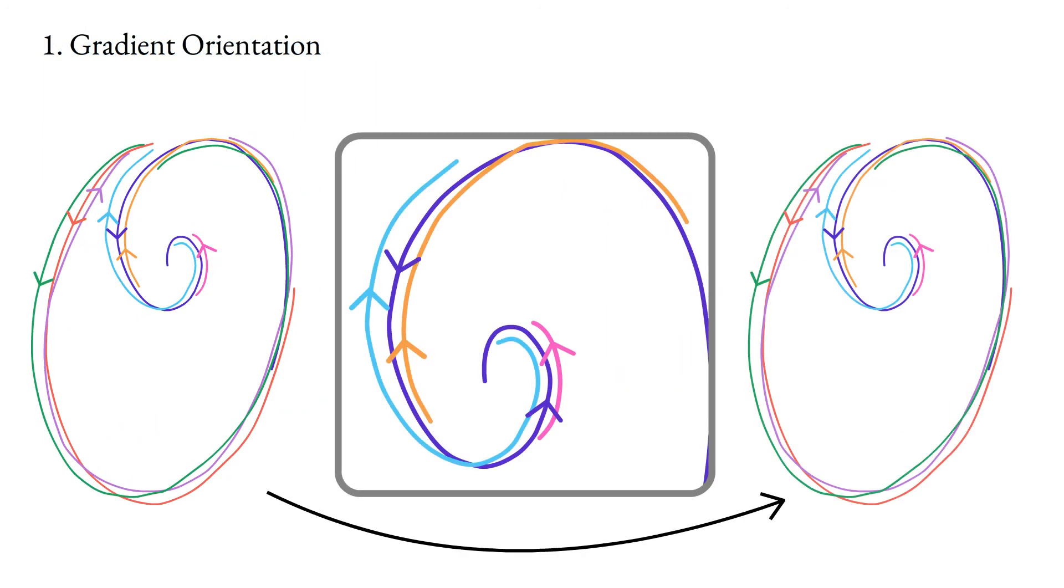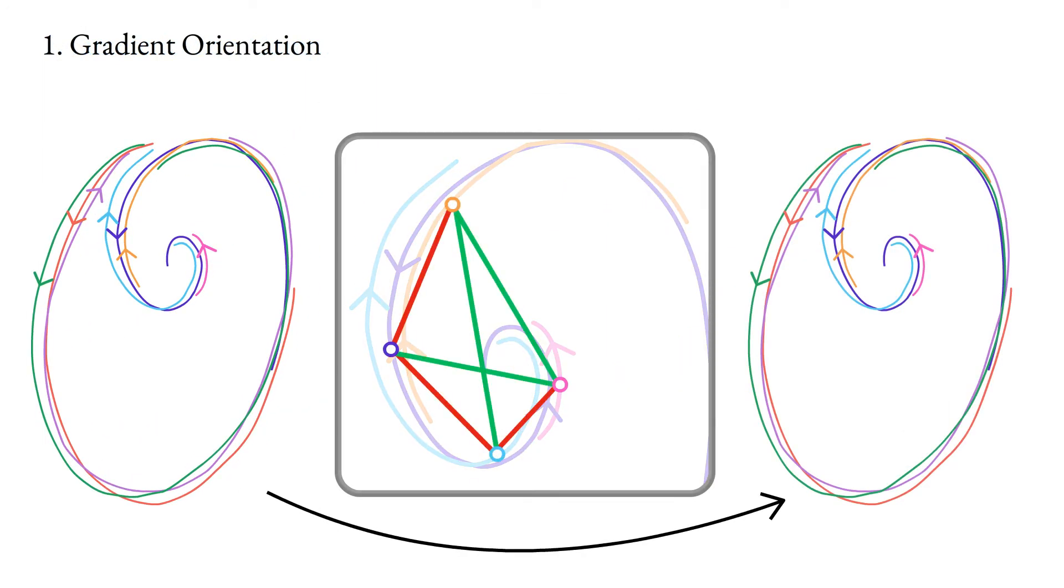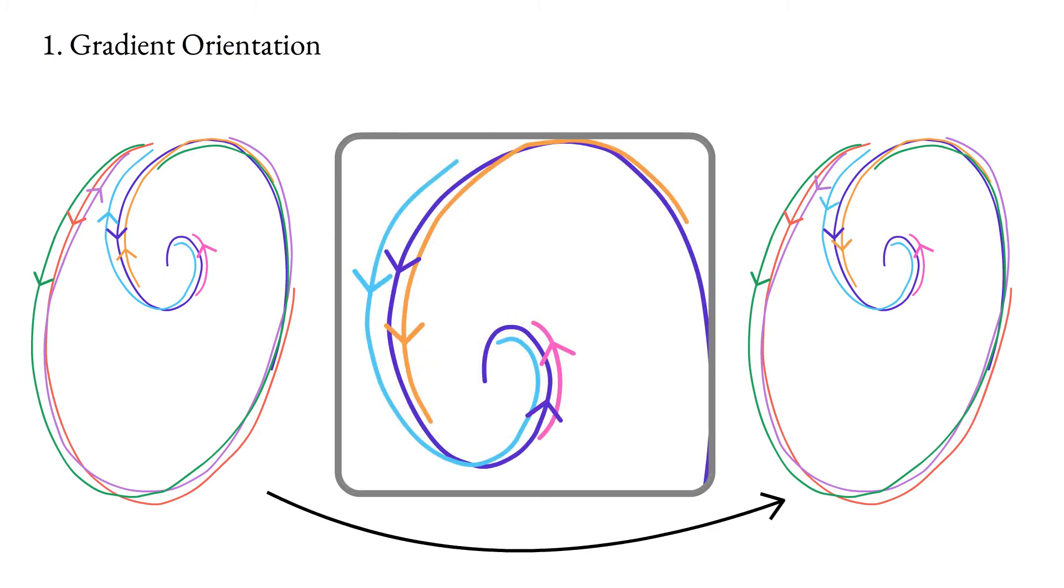We first compute gradient orientations across all strokes in the cluster that jointly maximize tangent similarity for adjacent roughly parallel strokes, satisfying our tangent alignment and iso-line span properties.